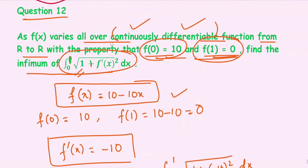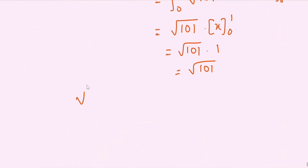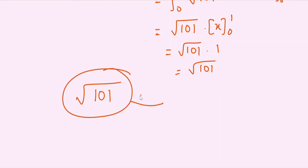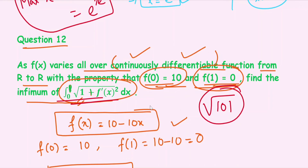This integral equals √101, which is a constant. Since the integral value for this function is a constant, the infimum equals √101. The answer is clearly √101.